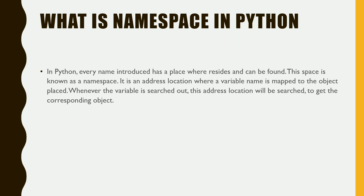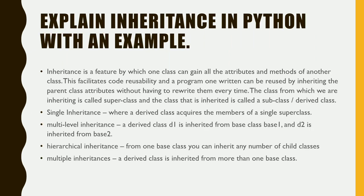What is a namespace in Python? In Python, every name is introduced into a space where it resides and can be found — this space is known as a namespace. It is an address location where a variable name is mapped to the object. Whenever a variable is searched, this address location will be looked up to get the corresponding object.